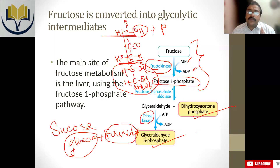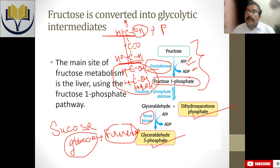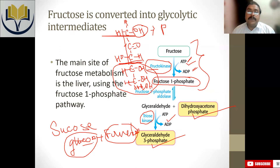If you look at this process energetically, there is no difference — because fructose also uses two ATP in its preparatory stage, just like glucose entering glycolysis also utilizes two ATP in its preparatory stage.